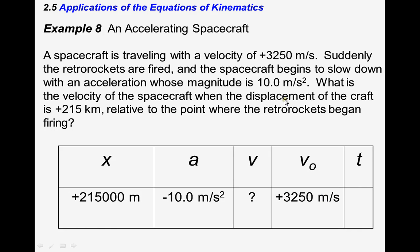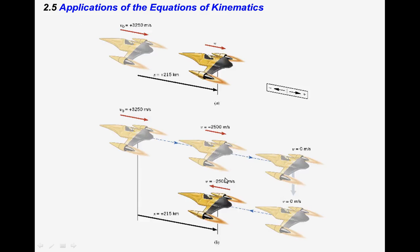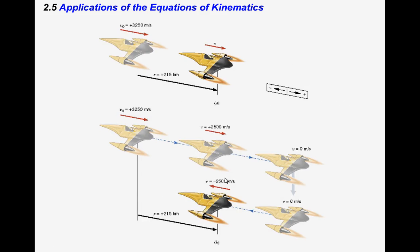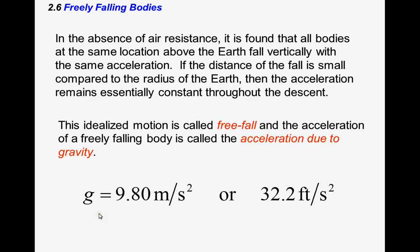We know the initial velocity and displacement; we want the final velocity and don't care about time. So again we use v² = v₀² + 2ax. Solving gives v = ±√(3250² + 2(−10)(215,000)) = ±2,500 m/s. We then step in and reason: the spacecraft was slowing down but hadn't reversed direction, so the answer is positive 2,500 m/s. Next we'll talk about free fall.